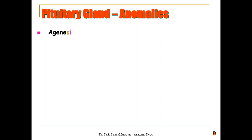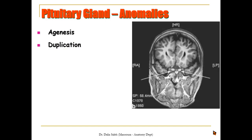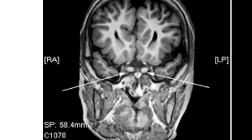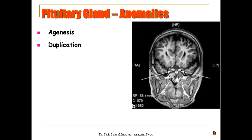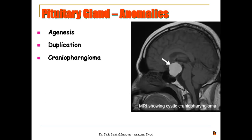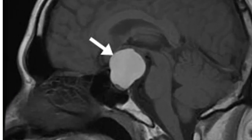For the anomalies of the pituitary gland we have the following. Either agenesis or absence of the pituitary gland, which is of course incompatible with life. Or the opposite — duplication of the pituitary gland, as seen in this coronal MRI section where double arrows point at two different pituitary glands. Or we can have a tumor of the pituitary gland called craniopharyngioma, seen as a big cyst at the sella turcica.